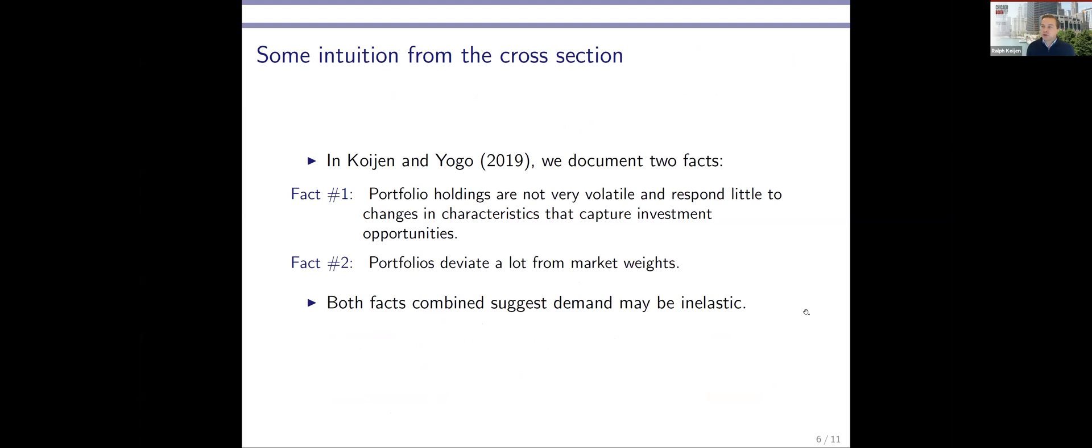What is critical is to get a feeling for what zeta or what the demand elasticity actually is empirically. I'm going to draw a little bit on the work that Moto Yogo and I did. We documented two facts, which I think are underlying the elasticity estimates that the literature has found. First of all, portfolio holdings, as I mentioned, are not particularly volatile. You can see that characteristics are changing, prices are changing, but portfolio holdings don't respond all that much. Now that in and of itself may be fine, there's lots of models where there's no rebalancing whatsoever. But then there's a second fact that seems to be perhaps more challenging, which is that if you look at the portfolios, they actually deviate a lot from the market portfolio. A typical institution holds something like 60 stocks, the weights that they hold are very different from standard market weights. And so that looks very active, but then in response to changes in investment opportunities, they're not rebalancing their portfolios all that much. And that suggested that perhaps demand is more inelastic.